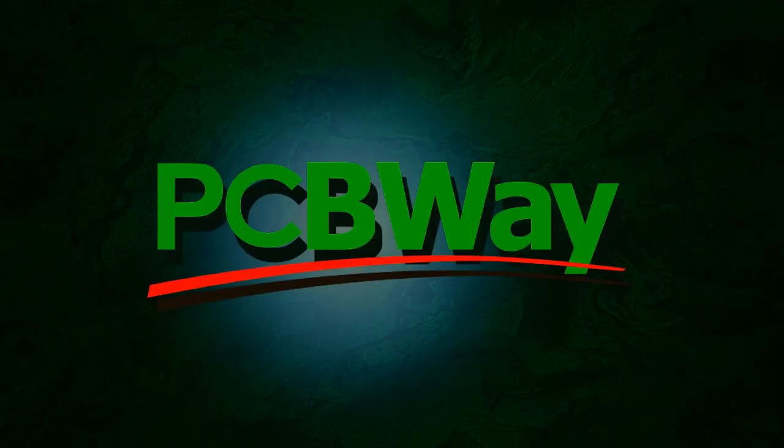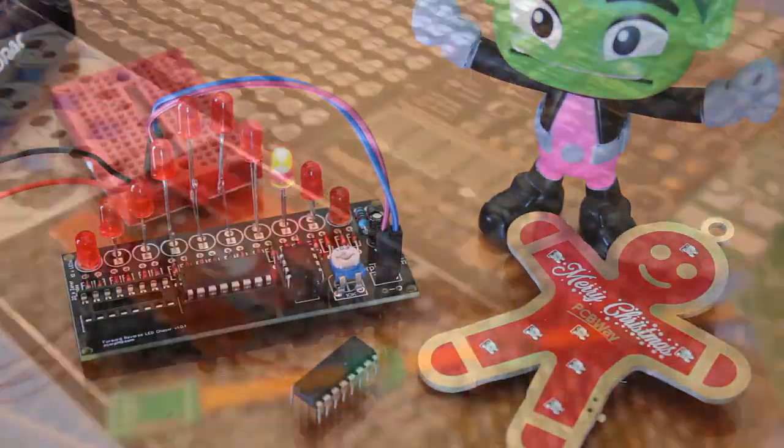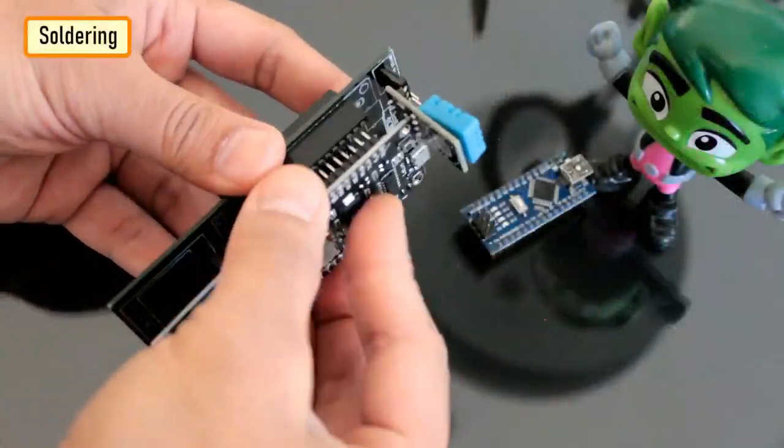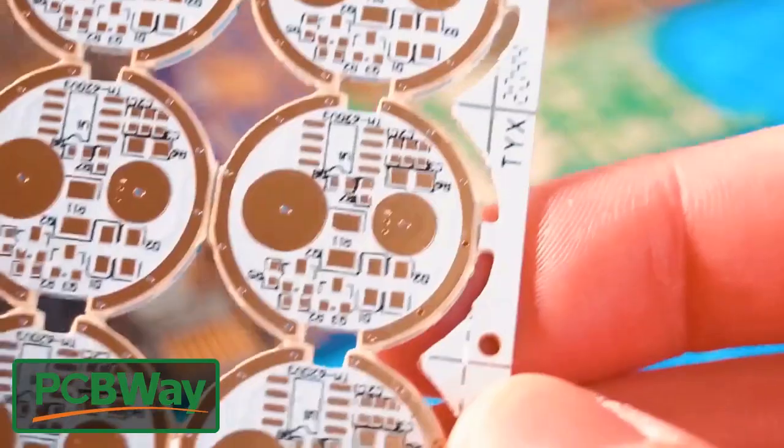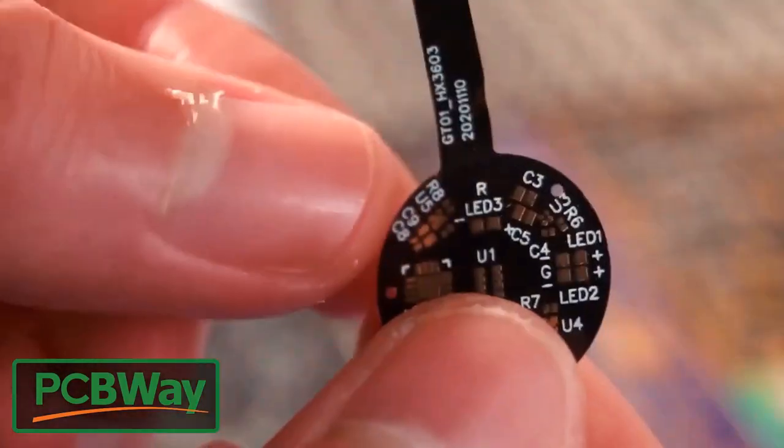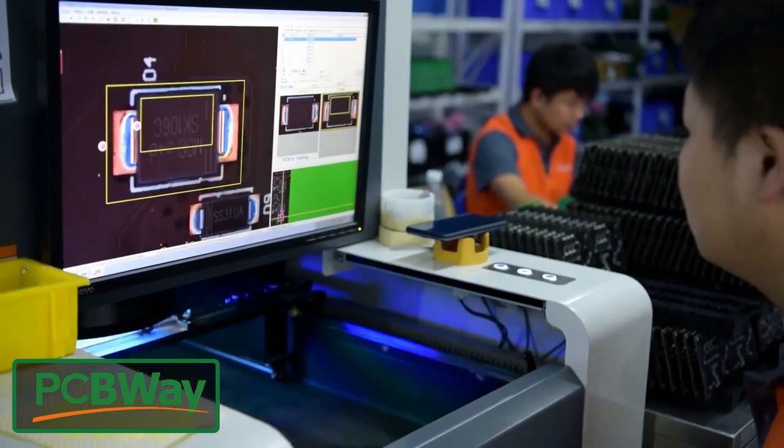This video is sponsored by PCBWay. PCBWay specializes in manufacturing of very high quality, low volume, colored PCBs at a very budgetary price. In addition to standard PCBs, you can order advanced PCBs, aluminum PCBs, rigid flex PCBs. They also provide PCB assembly and other related services which can meet your need at the greatest extent.